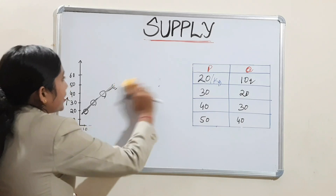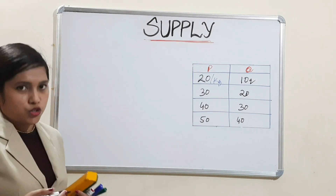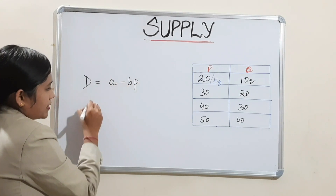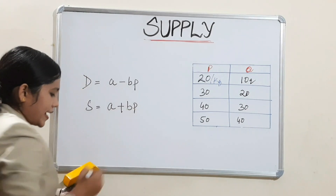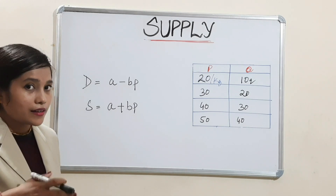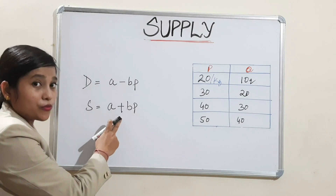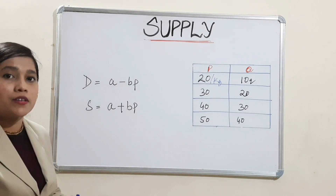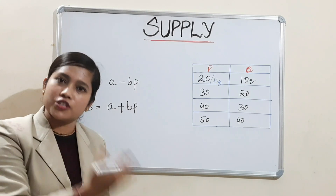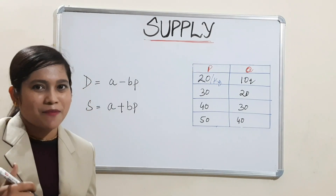So this is all about supply, law of supply, schedule of supply, and determinants of supply. In equation form, demand is written as A minus BP, whereas supply is written as A plus BP — where A is your constant and B is slope. The minus sign in demand shows inverse relationship; the plus sign in supply shows direct relationship between quantity supplied and price. Next lecture I will cover in which condition supply will shift and in which condition supply will change — extension or contraction in supply. Till then, stay with my channel and don't forget to like and subscribe. Thank you.